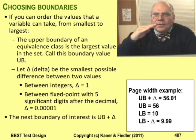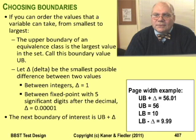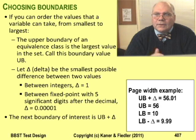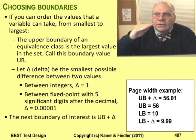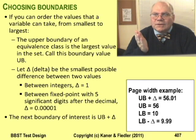The boundary test above the largest value in a domain is that value plus delta. The boundary test below the smallest value in a domain is that value minus delta. Here's a variation on the theme. Suppose that instead of specifying a domain by naming its largest value, like 56, you specify it by saying something like all values less than 50. In this case, 50 is outside the domain — everything below 50 is in, but not 50. The largest value inside the domain is 50 minus delta. All you have to remember is that delta is the smallest difference possible for numbers of this type.